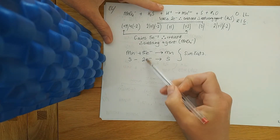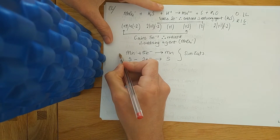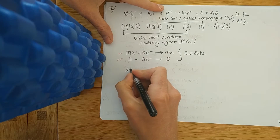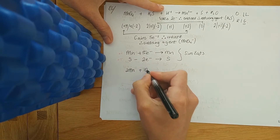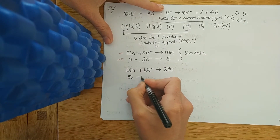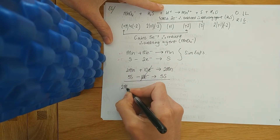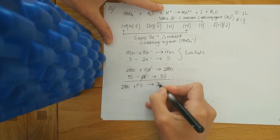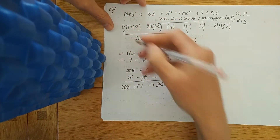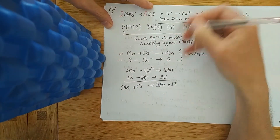To get the same number of electrons, find the lowest common multiple, which is 10. Multiply the manganese equation by two and the sulfur equation by five: 2Mn + 10e⁻ → 2Mn; 5S − 10e⁻ → 5S. You're left with 2Mn and 5S, so throw those big numbers — 2 and 5 — back into the original equation.